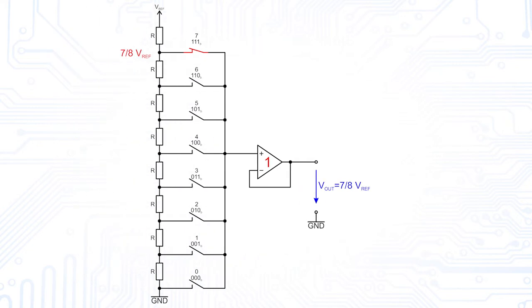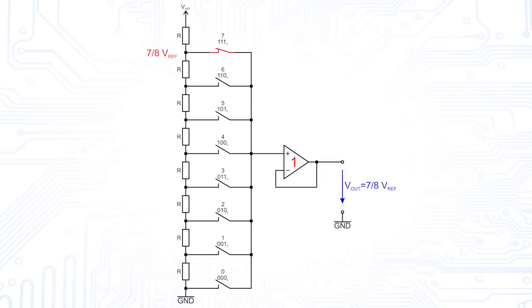Note in this example that the tap point for full-scale is after the first single resistor, giving an output voltage of 7/8 of VREF. When a digital 0 code is applied, the lowest switch is closed and the output goes to 0.